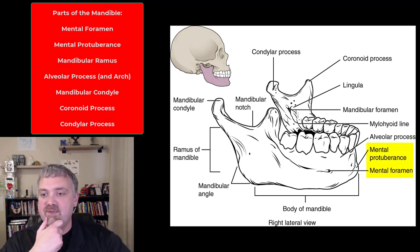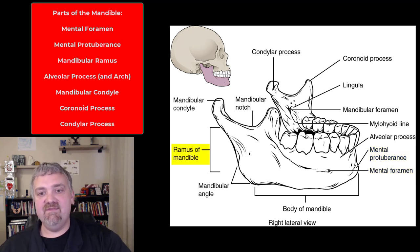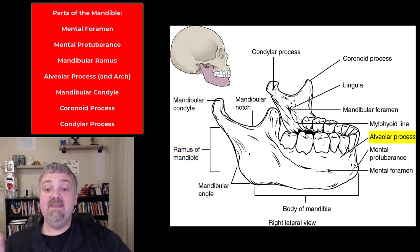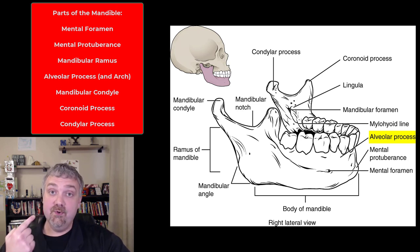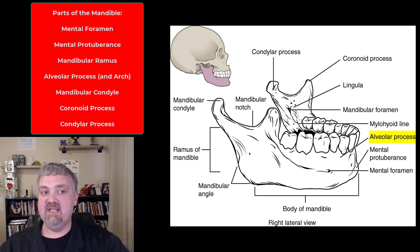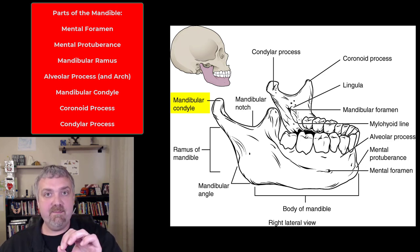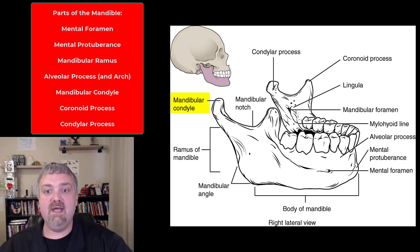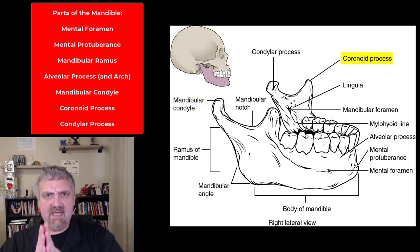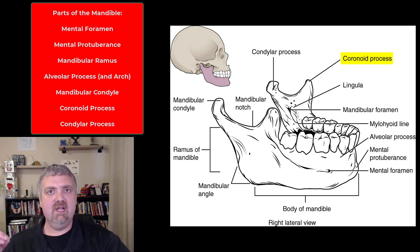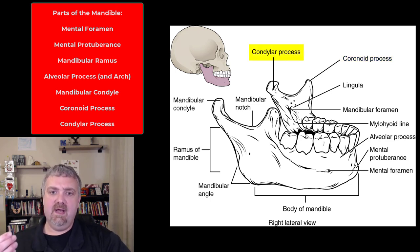Here's a closer view of the mandible. I already mentioned the mental foramen and mental protuberance. We have the mandibular ramus — a ramus is an angle, so where the mandible changes direction. The alveolar process is each individual socket a tooth goes into; all of them as a group is the alveolar arch. The mandibular condyle on the back forms your TMJ — your temporal bone and mandible form the temporomandibular joint. The coronoid process is a flatter piece of bone on the front where muscles involved in mastication attach.